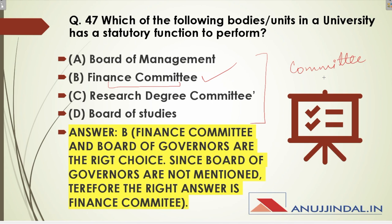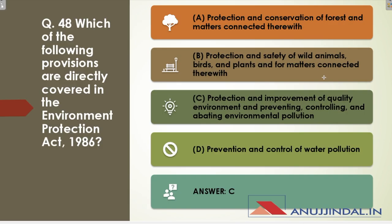Question 48: Which of the following provisions are directly covered in the Environment Protection Act 1986? It is very important to learn all the acts for your exam. The answer is: protection and improvement of quality of environment, and preventing, controlling, and abating environmental pollution. Wherever environmental pollution is discussed, this is the relevant part of the Act.